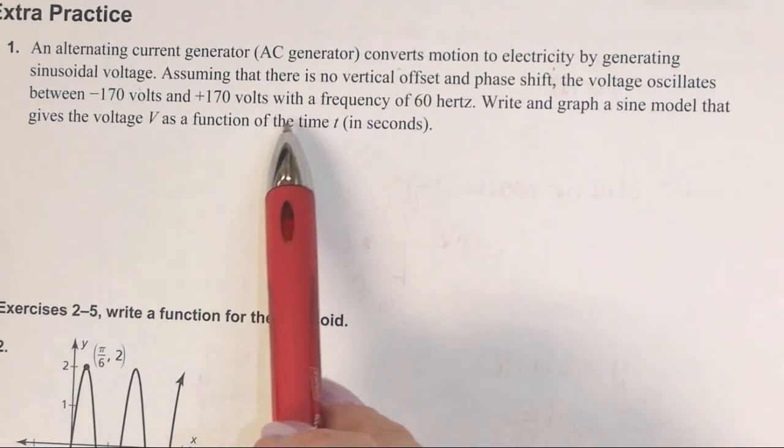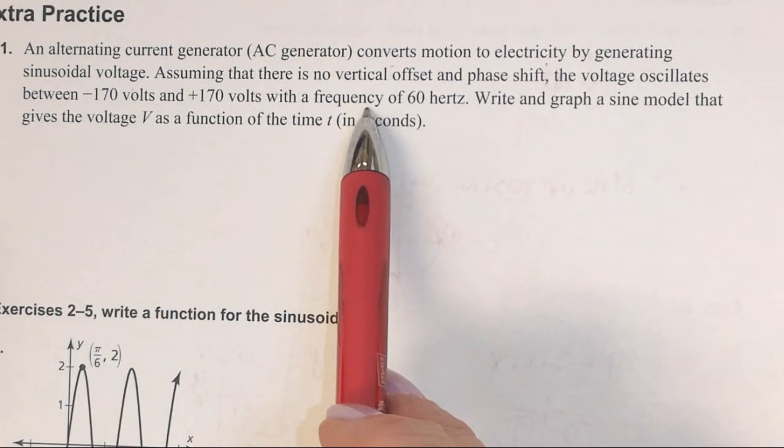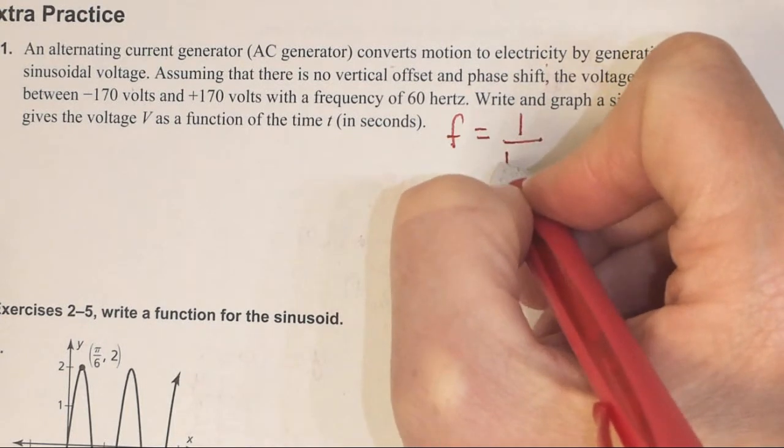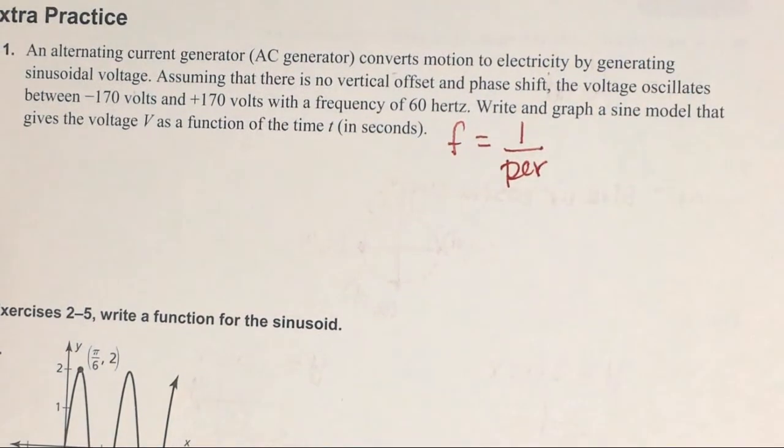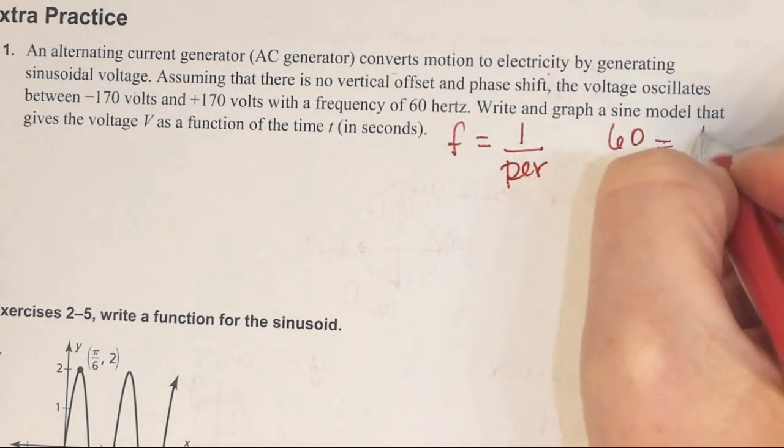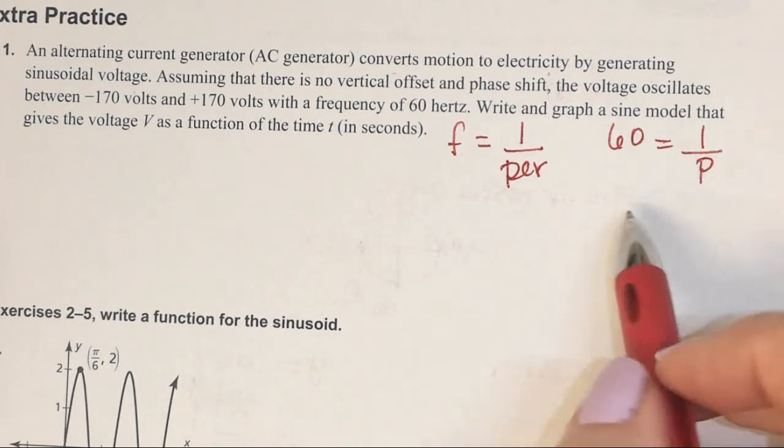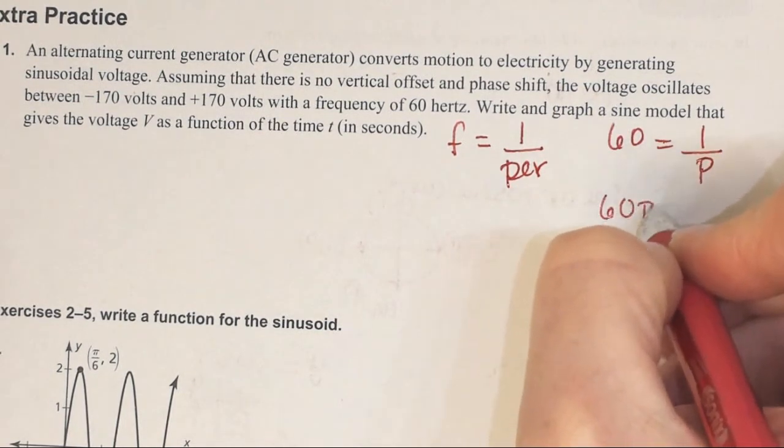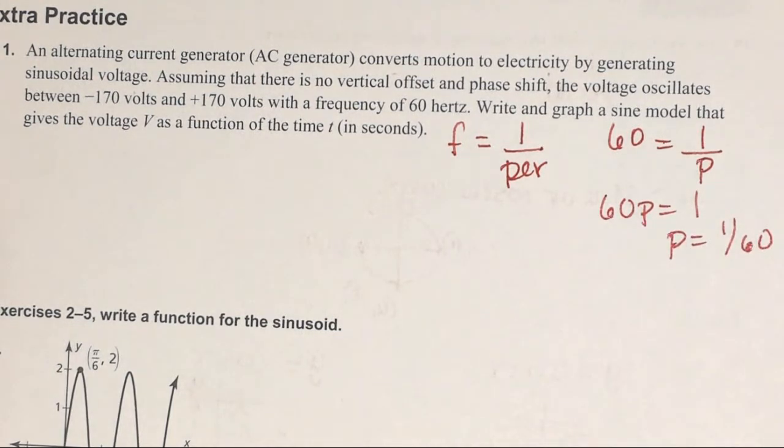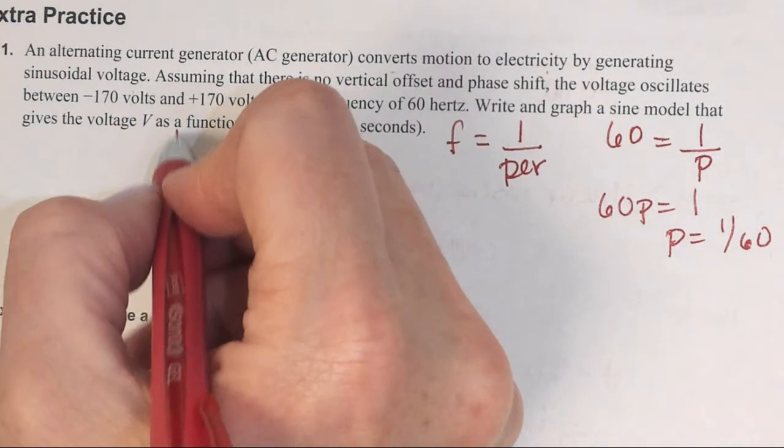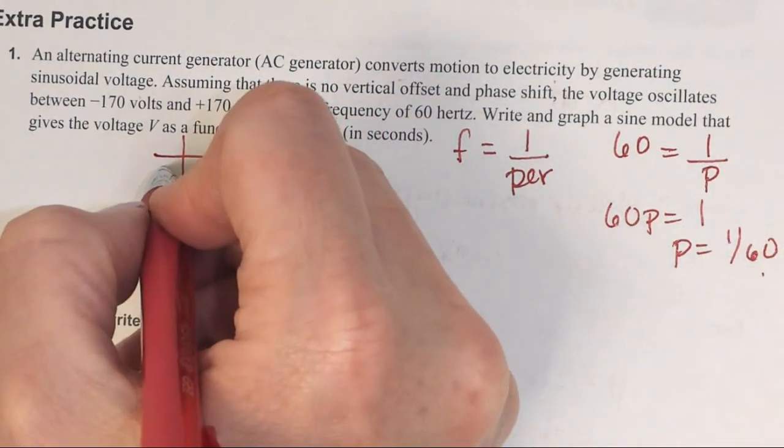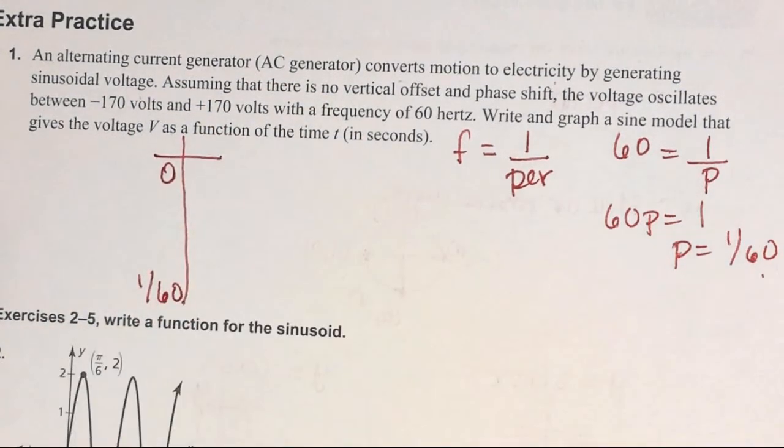Write and graph a sine model that gives the voltage V as a function of time in seconds. They're telling us the frequency, so we know frequency equals 1 divided by the period. If frequency is 60 hertz, we do 60 = 1/P. So 60P = 1, the period is 1/60.